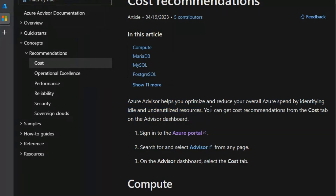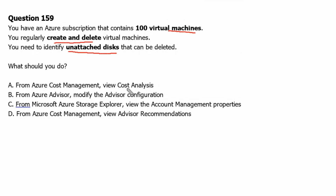Therefore, the Advisor recommendation would be the correct answer for this question. Option A, cost analysis, is not the correct answer because it only shows cost and resource information — it will not show whether any resource is underutilized or not utilized. Option B, modifying the Advisor configuration from Azure Advisor, will not help either. It only allows us to select or deselect subscriptions, and therefore will not advise us about underutilized or unutilized resources.